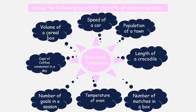Volume - is volume a count or measurement? It's a measurement, so volume would be continuous. Is speed a count or measurement? It's a measurement, it would be continuous data. Population of a town - count or measurement? Well, that's a count, so that would be discrete. Length of a crocodile - that is a measurement, so that is continuous.